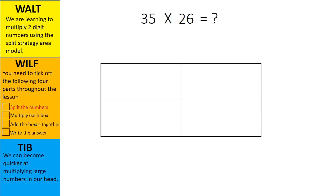We're going to split the number 35 into more manageable parts. This is called partitioning. I know that 35 has three tens, that's the same as 30 and five ones. I've written them above the top two boxes.